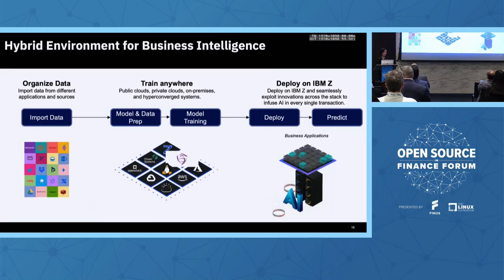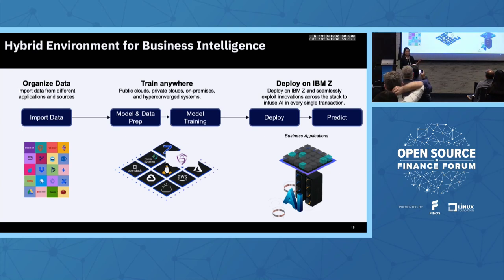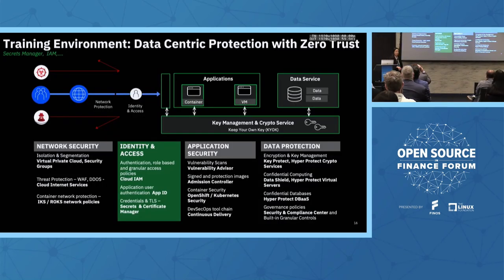I need to speed up a little. In a hybrid cloud environment, once you organize all the data from different places, what you really want to achieve is: train anywhere, deploy anywhere. For this particular case I'll show how to deploy on Z, but it really depends on your use case. When building a training environment in a hybrid cloud environment, you need to make sure it's secure — especially for financial data, which is one of the concerns for financial companies moving to cloud.